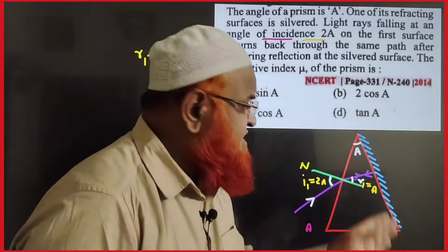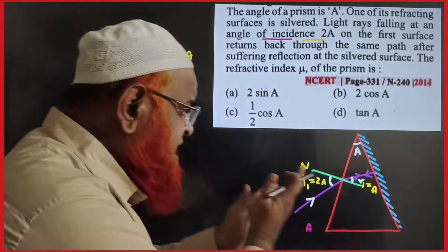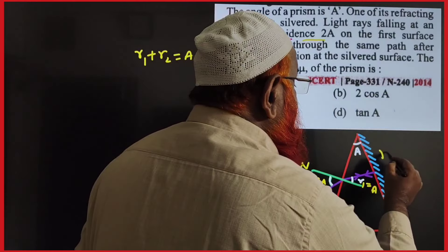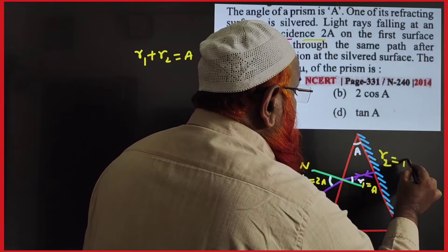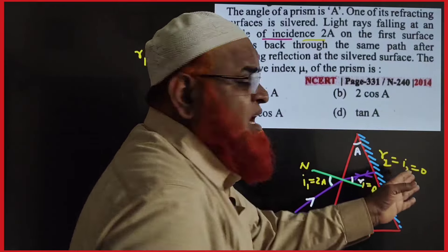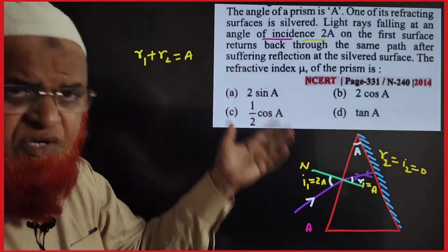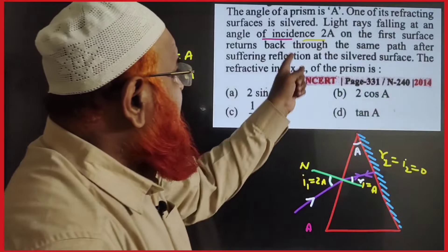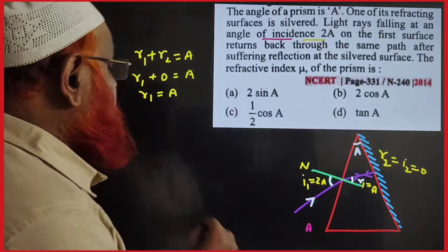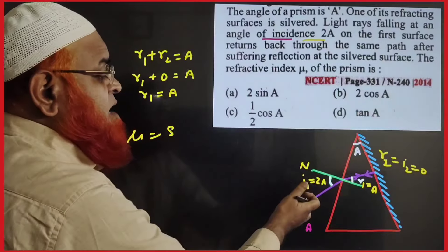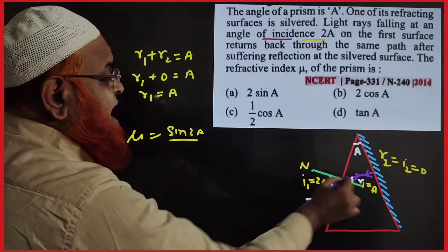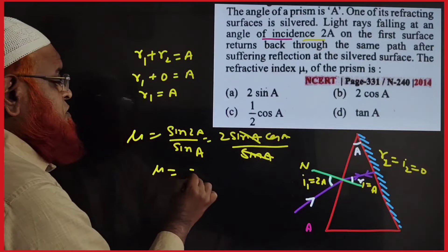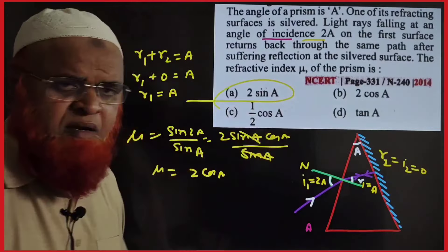For a silvered prism where light retraces its path: i2 = r2 = 0. Using r1 + r2 = A, we get r1 = A. Given that angle of incidence i1 = 2A, the refractive index mu = sin(2A)/sin(A) = 2sinA×cosA/sinA = 2cosA.